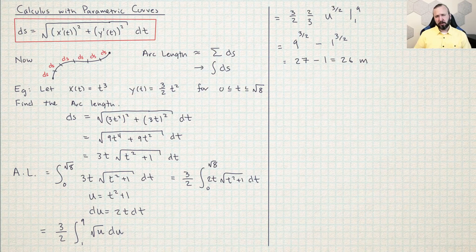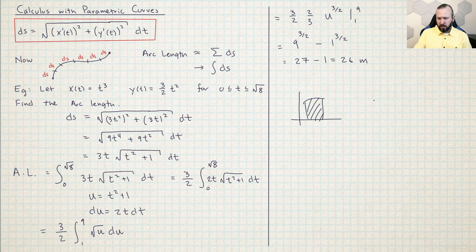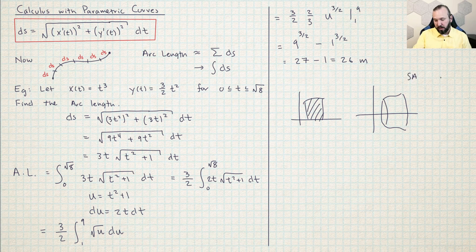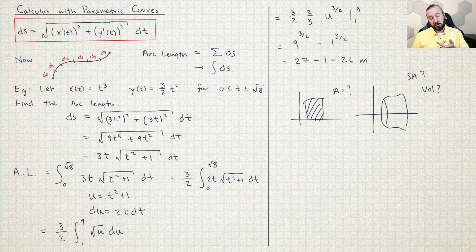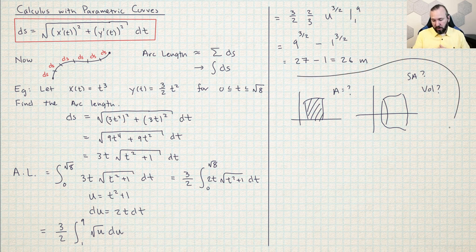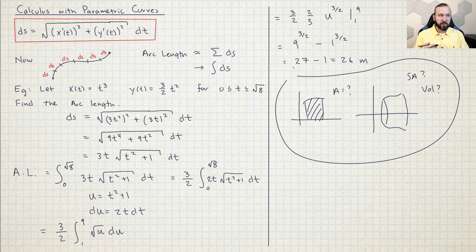There are other calculus problems you could be asked to do — finding the area under a curve, or revolving a parametric curve to find surface area or total volume. But moving forward in calculus 3, the only two things we're really going to need are finding the arc length and writing the equation of tangent lines. So for now, I advise you to just focus on those two topics.